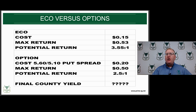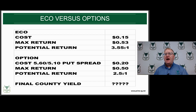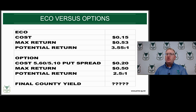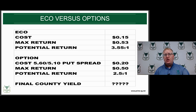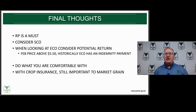Let's compare the option now to ECO. ECO cost is 15 cents, max return is 53 cents — that's a 3.5 to 1 return. Looking at the option position: cost is 20 cents, max return is 50 cents, giving a potential return of 2.5 to 1. You've got to keep in mind that final county yield impacts ECO but won't impact the option price. Looking at this right now, ECO would be favored.